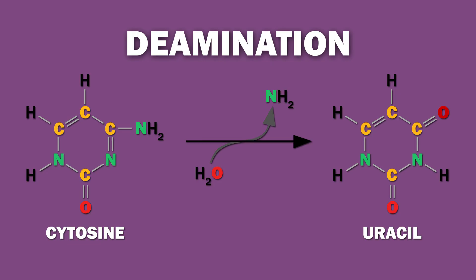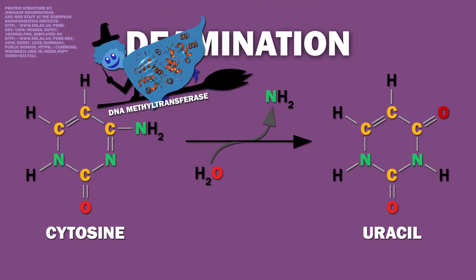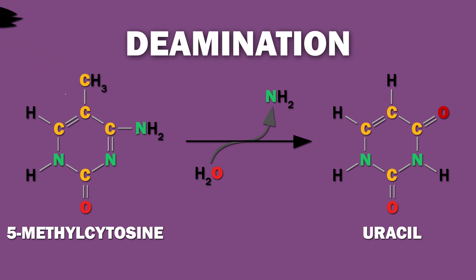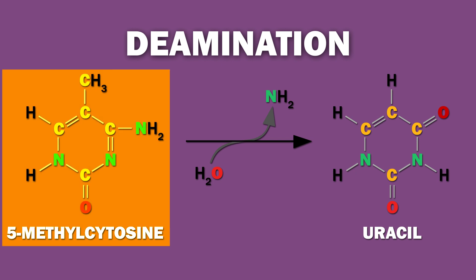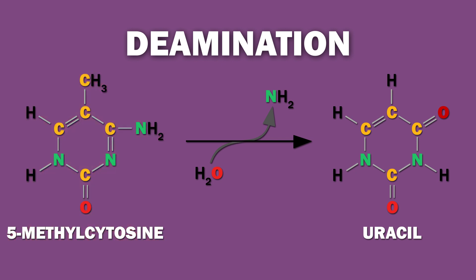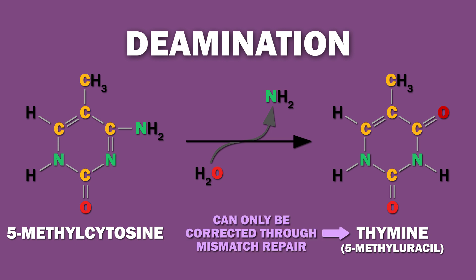Sometimes, a DNA methyltransferase adds a methyl group at the 5 position of the cytosine in a CpG dinucleotide, forming 5-methylcytosine. In this case, spontaneous deamination turns the cytosine into a thymine. Thymine is one of the four bases making up DNA, so this can only be corrected through mismatch repair, which is really inefficient.